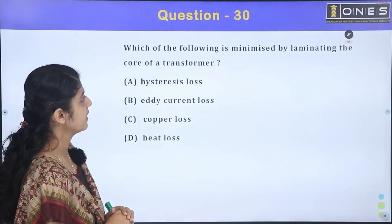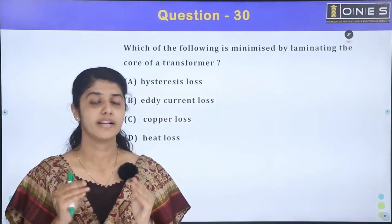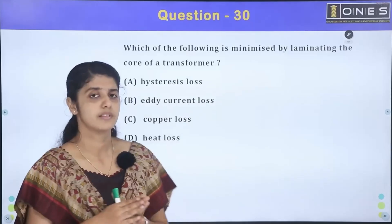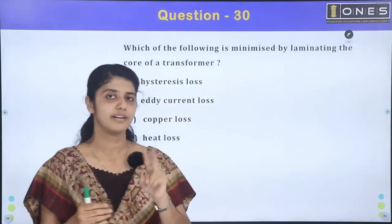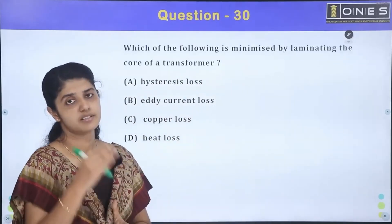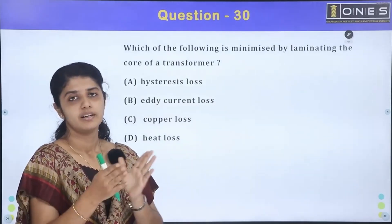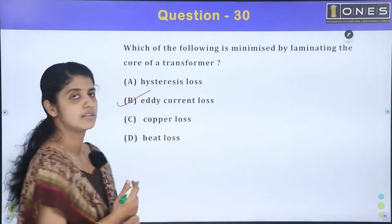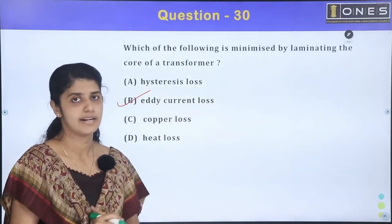Which of the following is minimized by laminating the core of a transformer? The answer is eddy current loss. By laminating the core and using silicon steel material, we minimize eddy current losses in the transformer core.